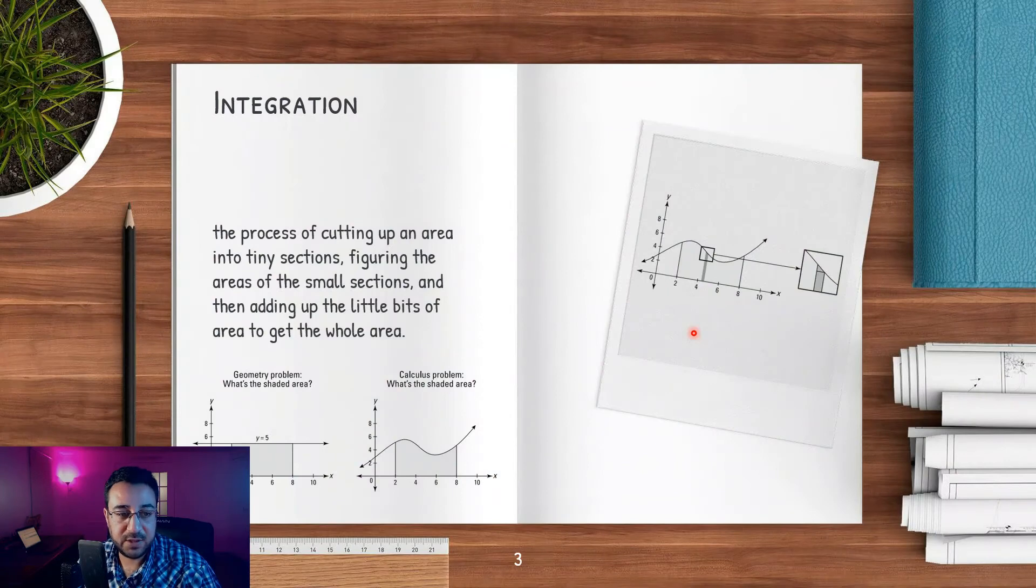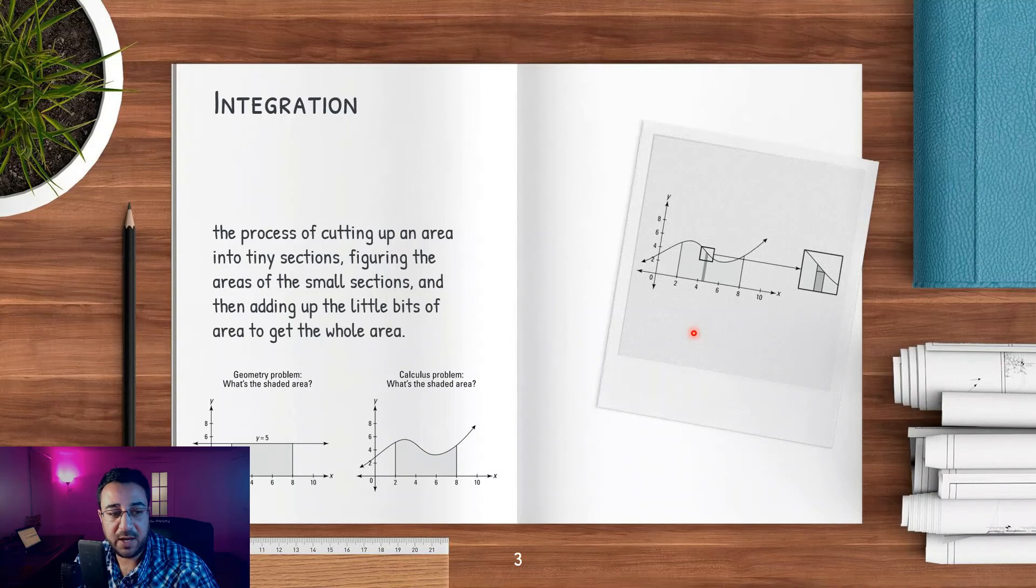For integration, the process is where you cut up the area into tiny little sections and you look into those small sections and add them up little bit by little bit in order to get the whole area. So you have an area that's complicated, it's not a linear area, and you cut it into little bits then add those little bits together to get the whole area.